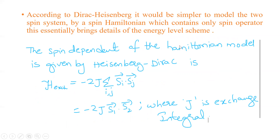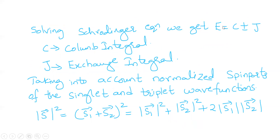This spin Hamiltonian brings out the details of the energy level scheme. The spin-dependent Hamiltonian given by Heisenberg-Dirac is: H_exchange = −2J Σ_{i,j} S_i · S_j. For a two-electron system, this becomes H_exchange = −2J S1 · S2, where J is the exchange integral. Solving the Schrödinger equation gives the energy value E = C ± J, where C is the Coulomb integral and J is the exchange integral, taking into account the normalized spin parts of the singlet and triplet wave functions.